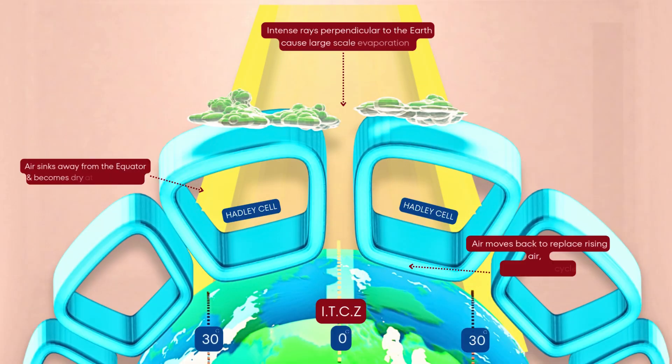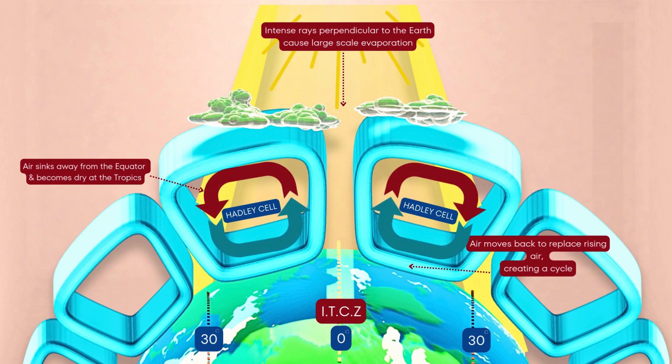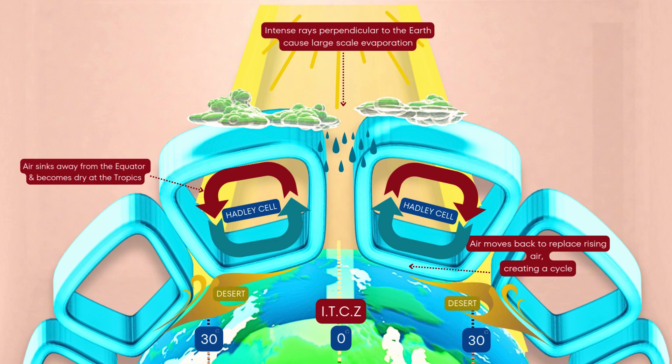On either side of the equator are the Hadley cells — huge loops of moving air. Warm air rises at the ITCZ and then travels north and south in the upper atmosphere before cooling and sinking down at around 30 degrees latitude. This creates hot deserts like the Sahara or Atacama.